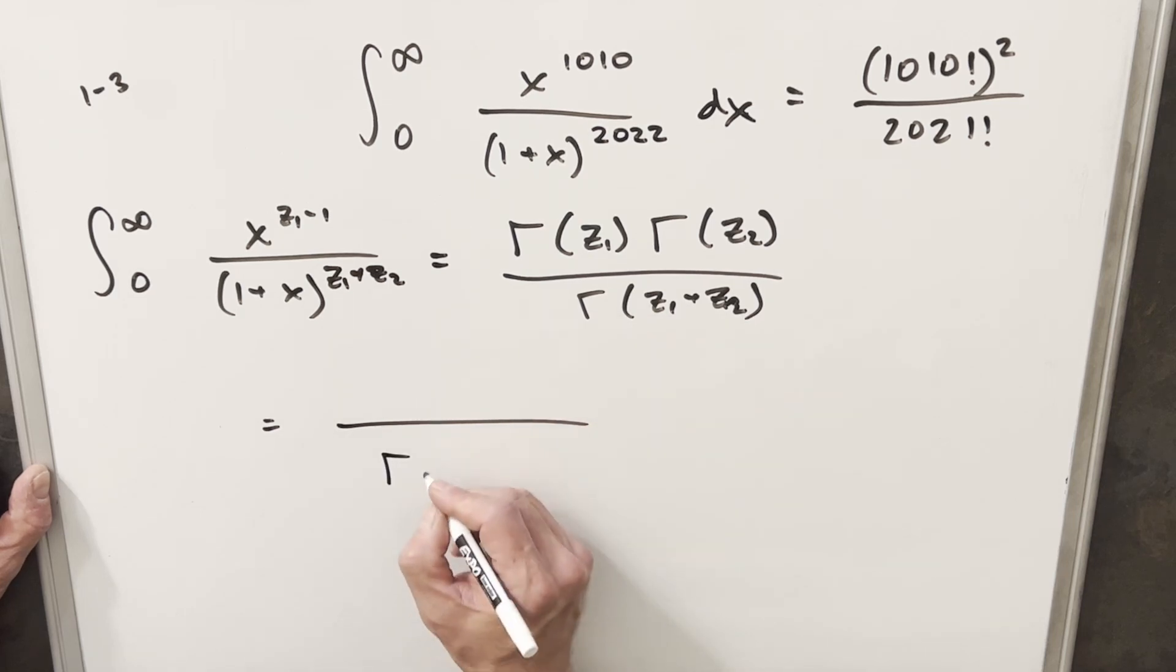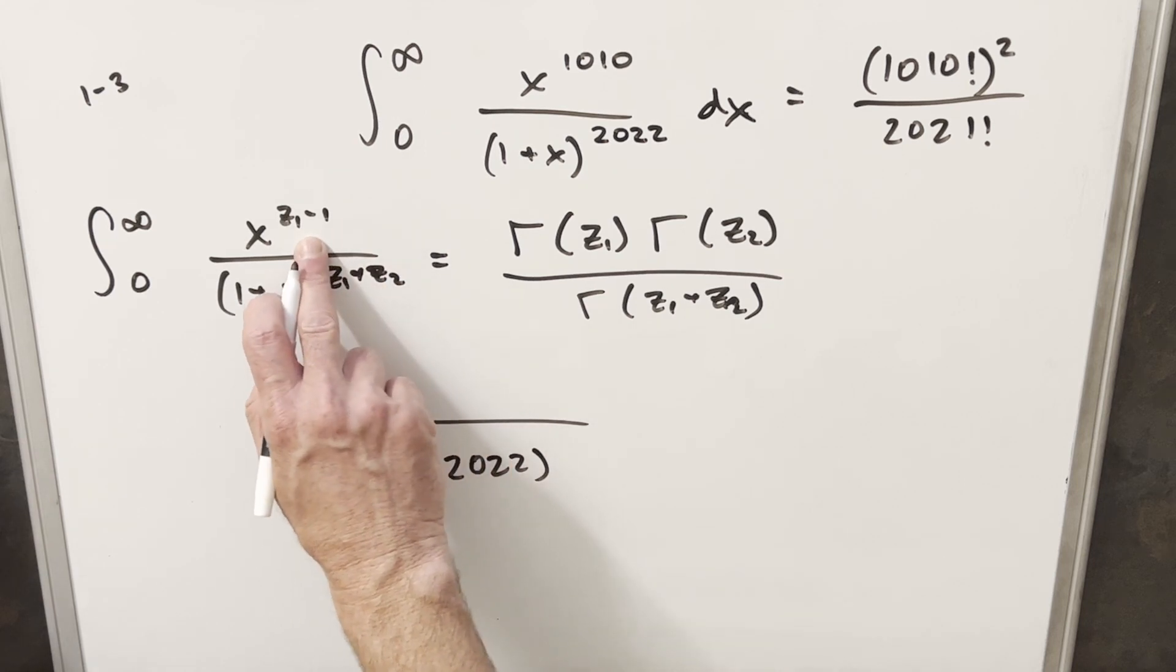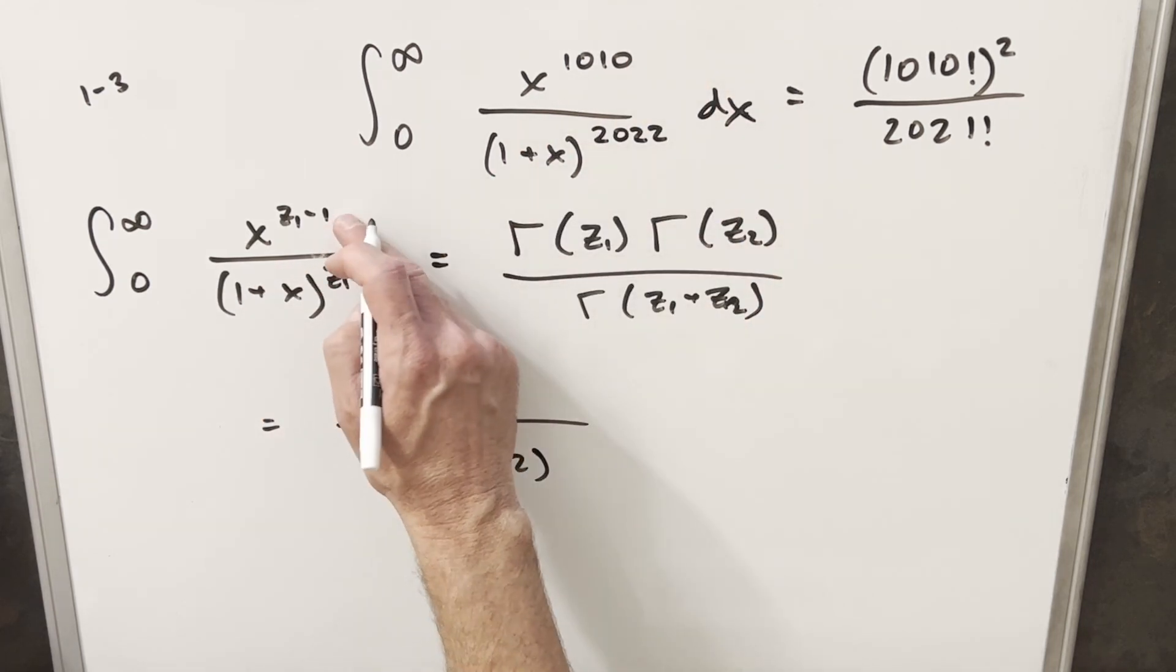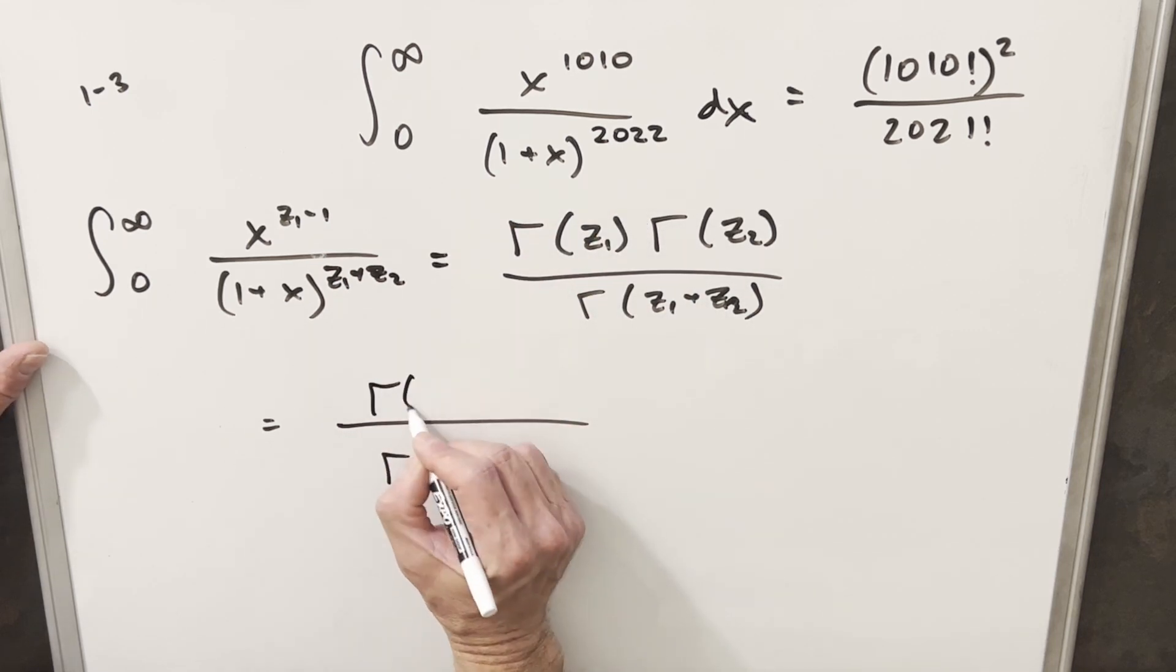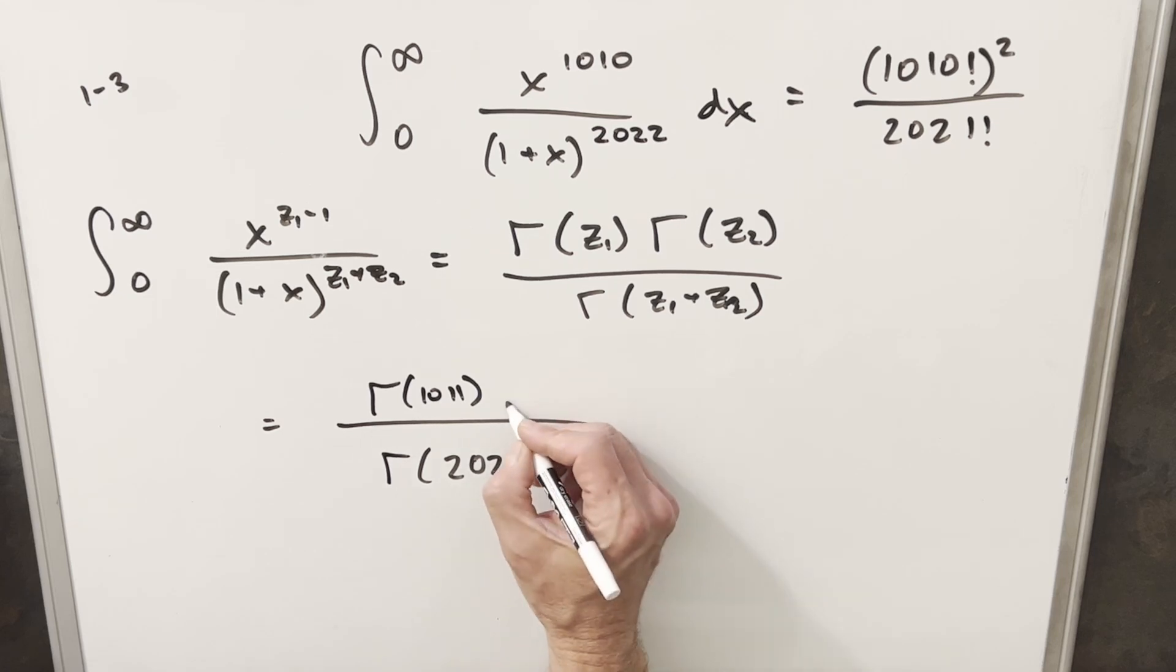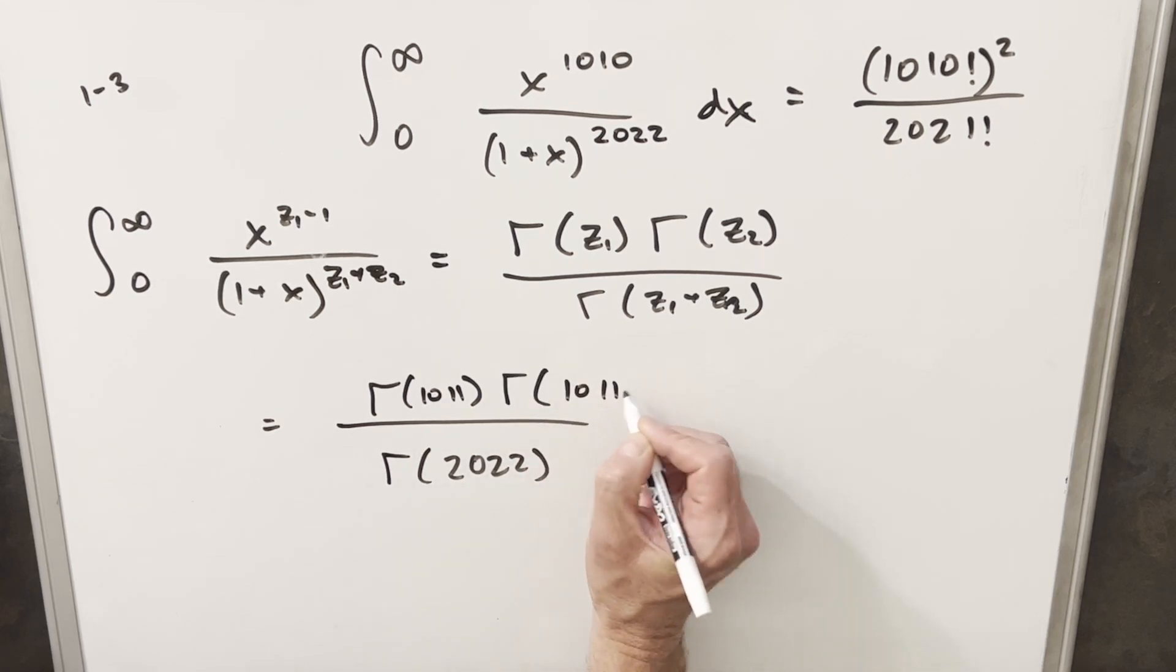So we could write our denominator as just gamma of 2022. And then for our z1 value, z1 minus 1 is going to be 1010. So that means z1 is going to be 1011. And then if we didn't already know it, we could just subtract z1 from this and we get our z2 value, which is also 1011.